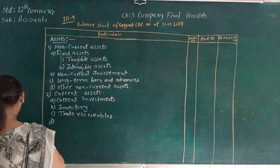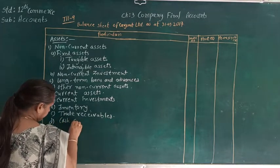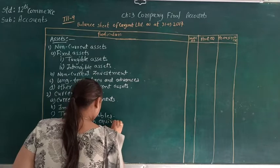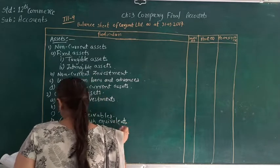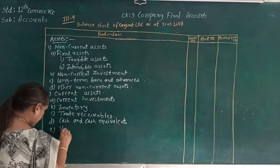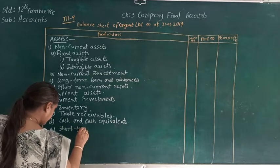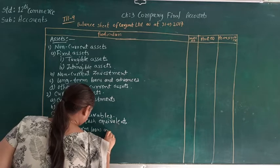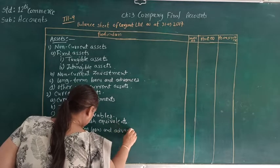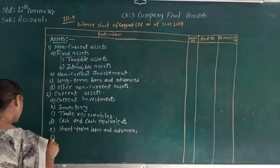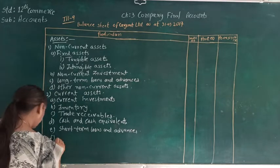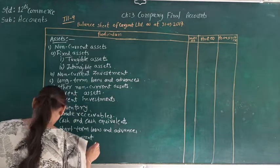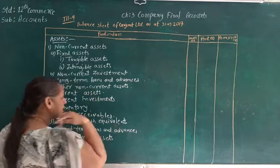After inventory, the third heading is trade receivable. Then the fourth one is cash and cash equivalent. And the last one is other current assets.